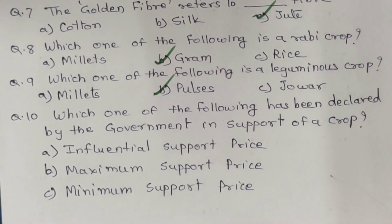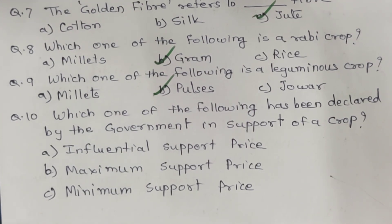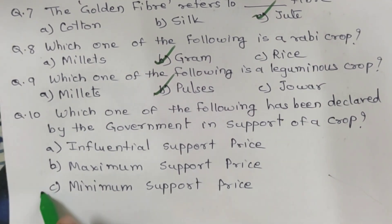Question 10. Which one of the following has been declared by the government in support of a crop? A. Influential support price. B. Maximum support price. C. Minimum support price. And the correct answer is C. Minimum support price.